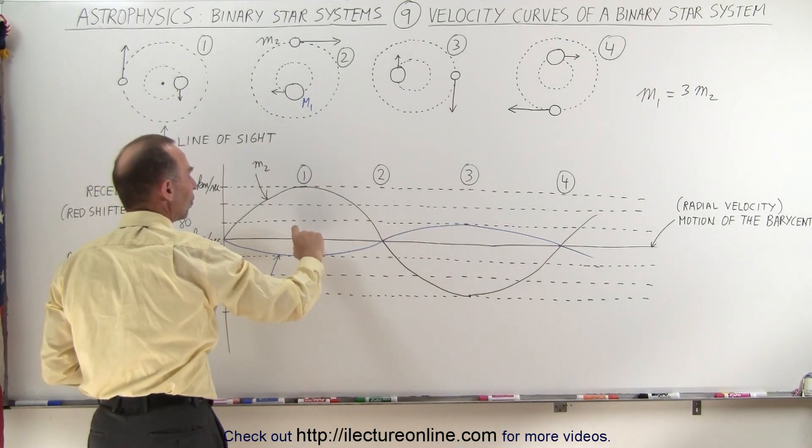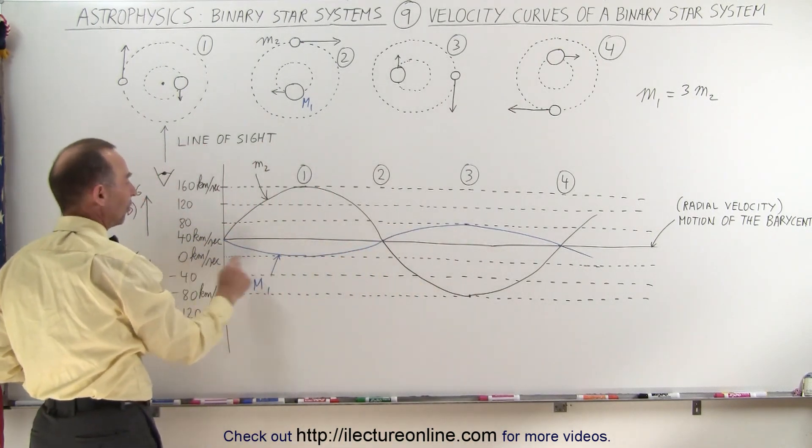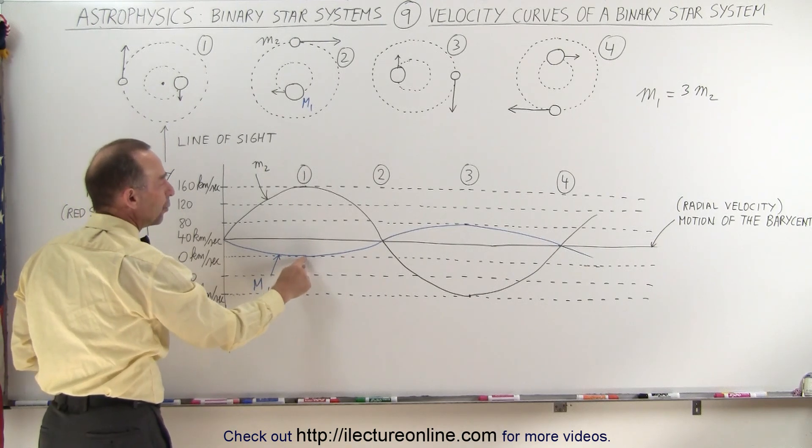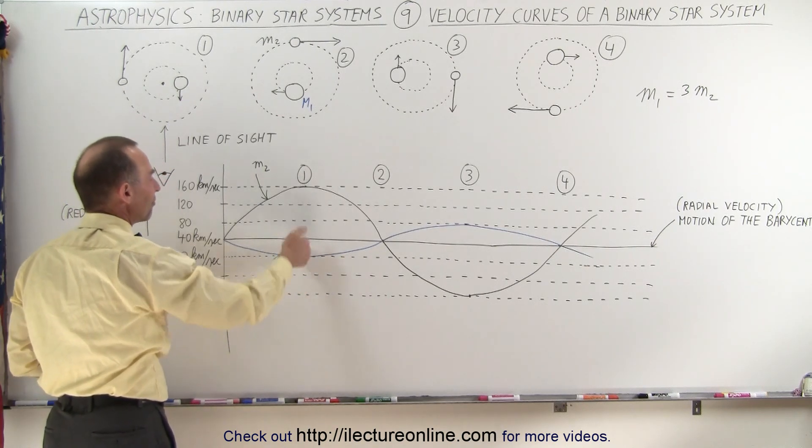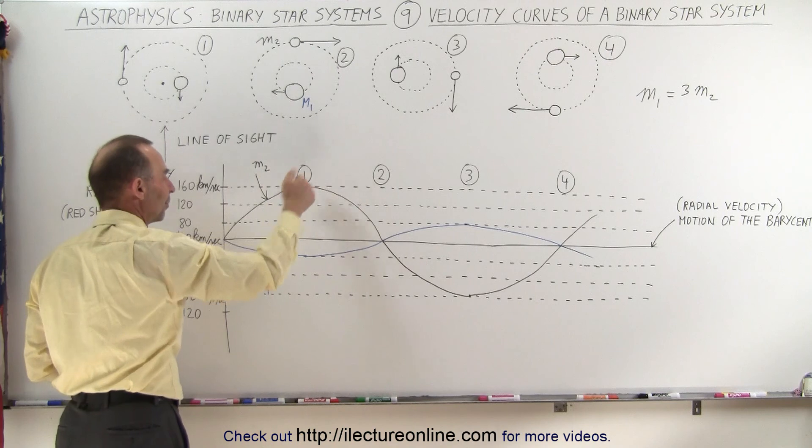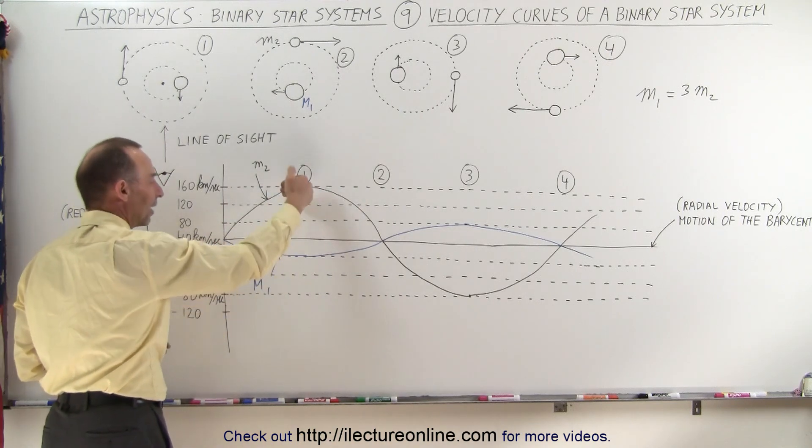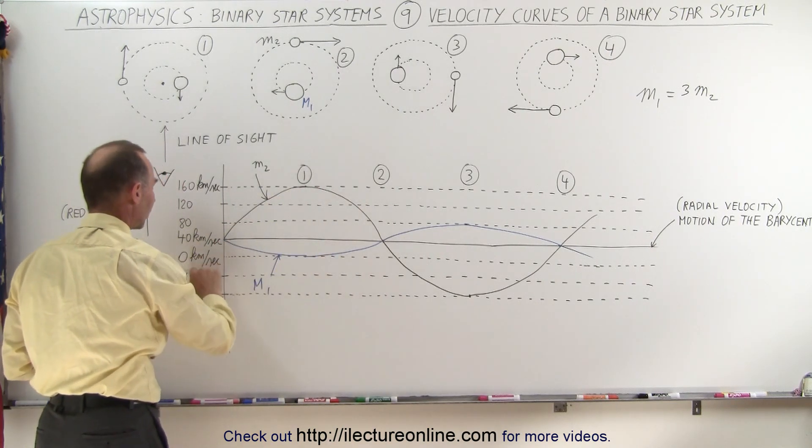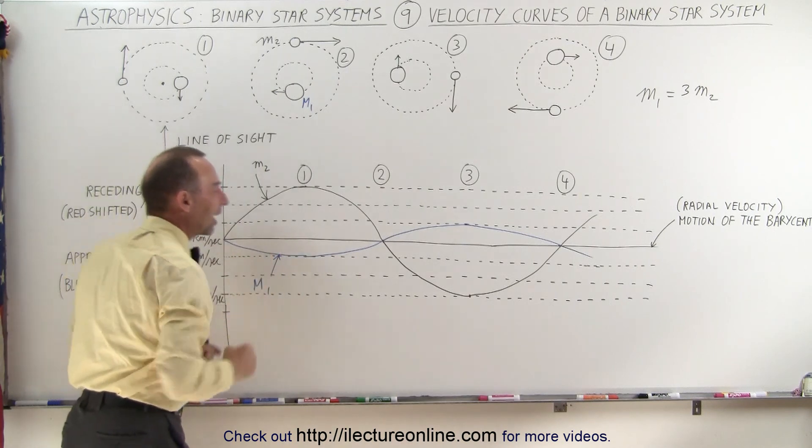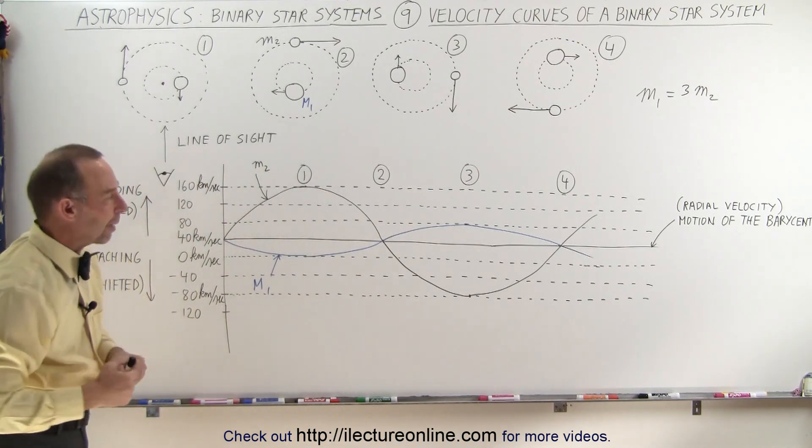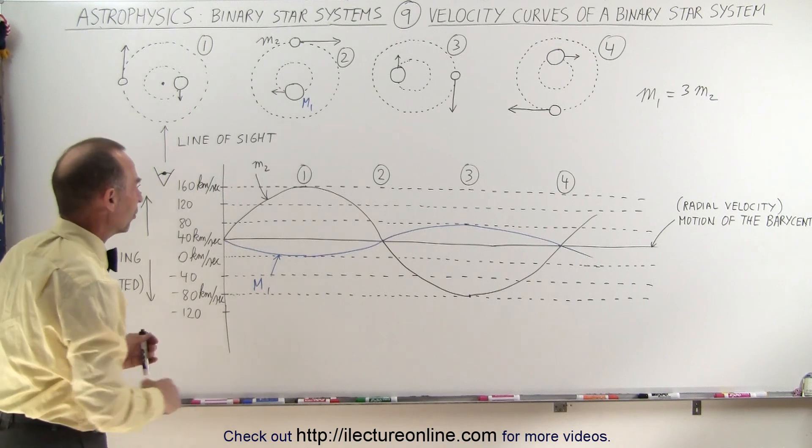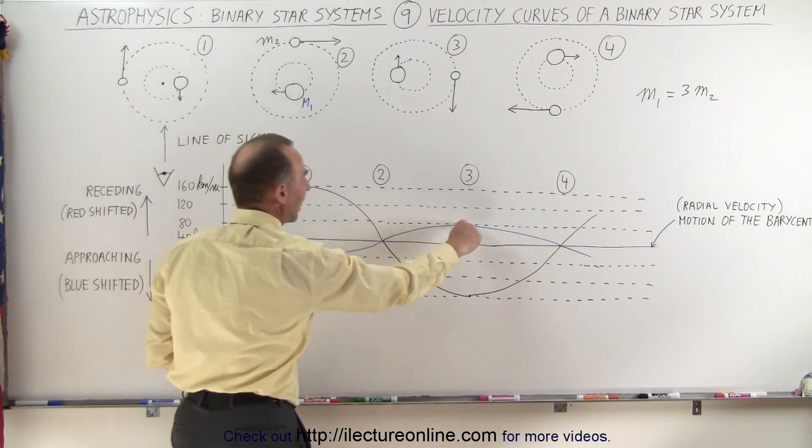In this case, of course, at that moment, it would not have any radial velocity because the velocity of the barycenter away from us at 40 kilometers per second and the velocity of the larger object moving towards us at 40 kilometers per second would then cancel out and we'd see zero Doppler shift at that particular moment, so it would be zero, 40, 80, zero, and so forth.